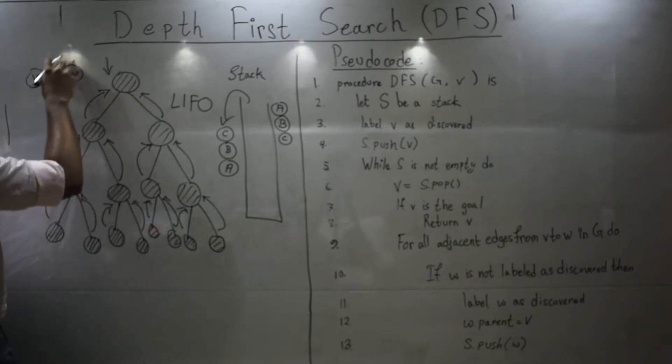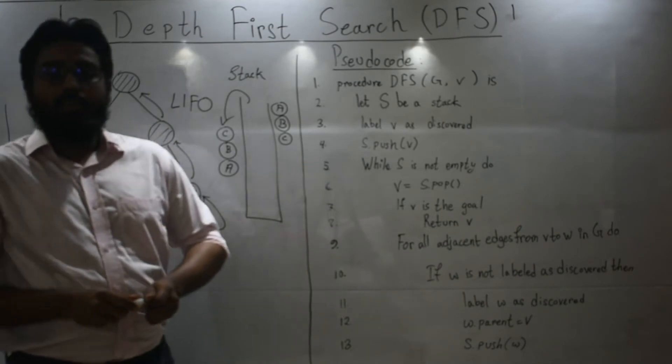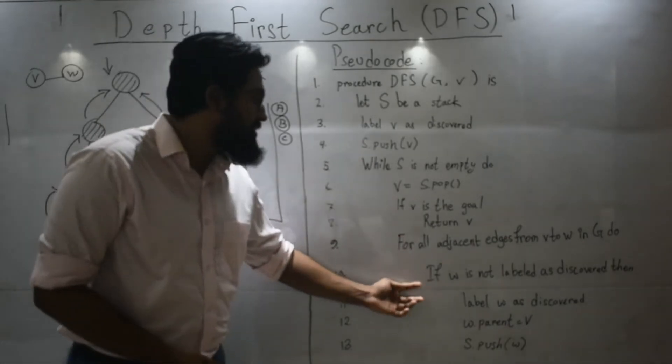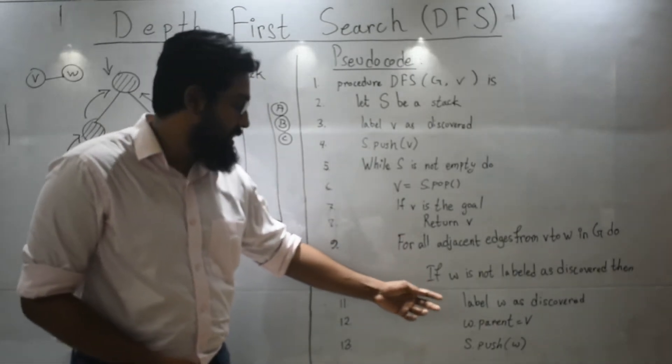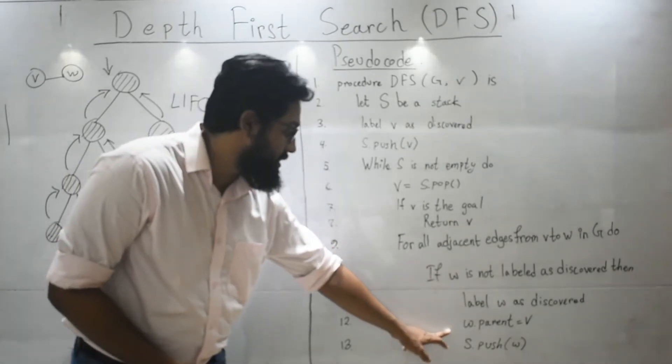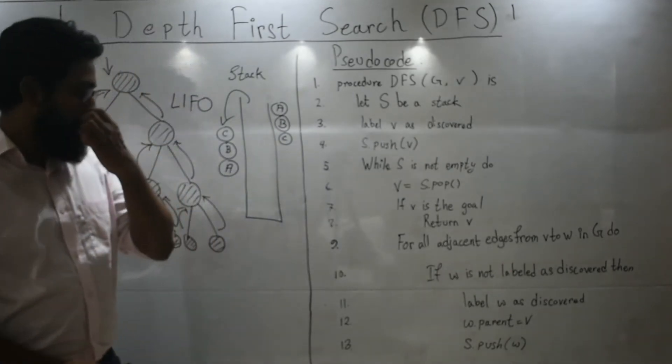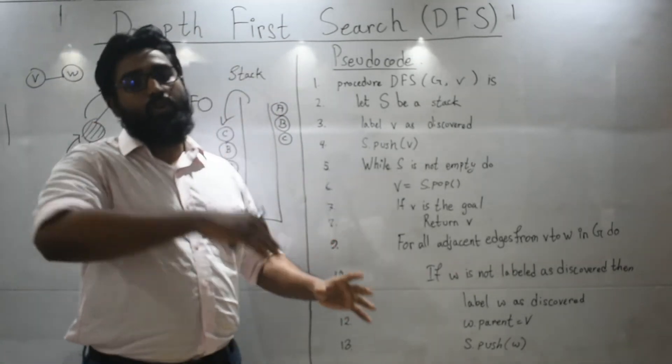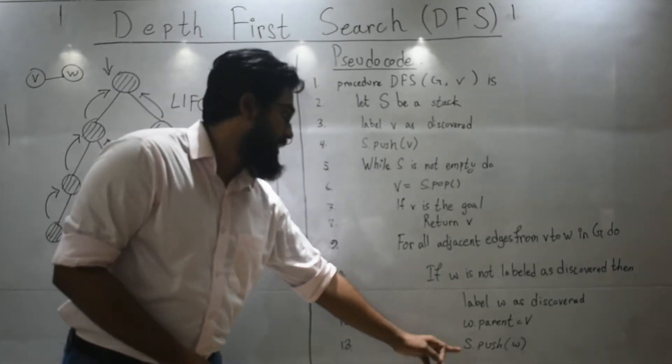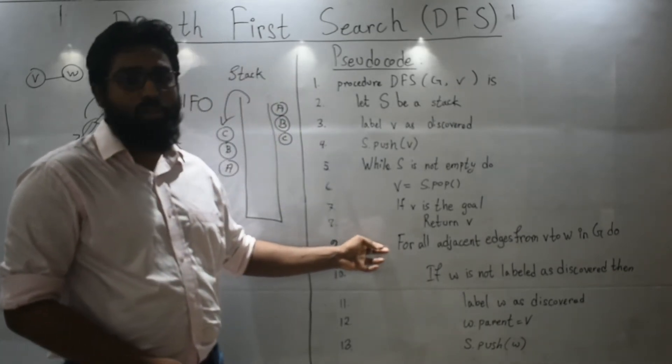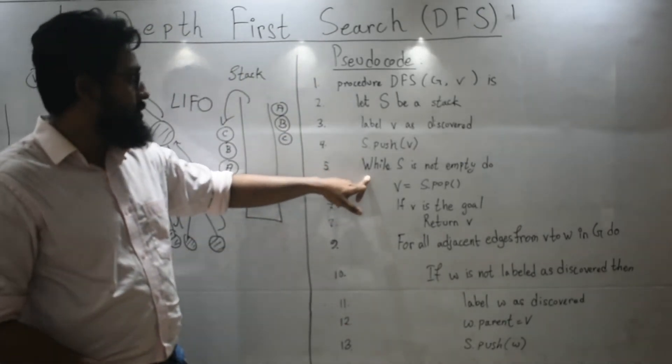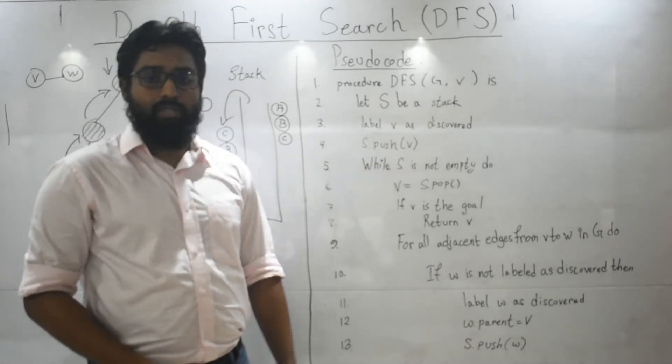all the adjacent or neighboring nodes of a node V is denoted over here as W. If W is not labeled as discovered, then perform these actions. What are those? Label W as discovered, W.parent equals to V. That just denotes from where it has come who is the parent of the node. And push that node W. And you keep doing this until you have finished all of your neighbors. You continue this loop until your stack becomes empty. Okay. Let's see the example now.